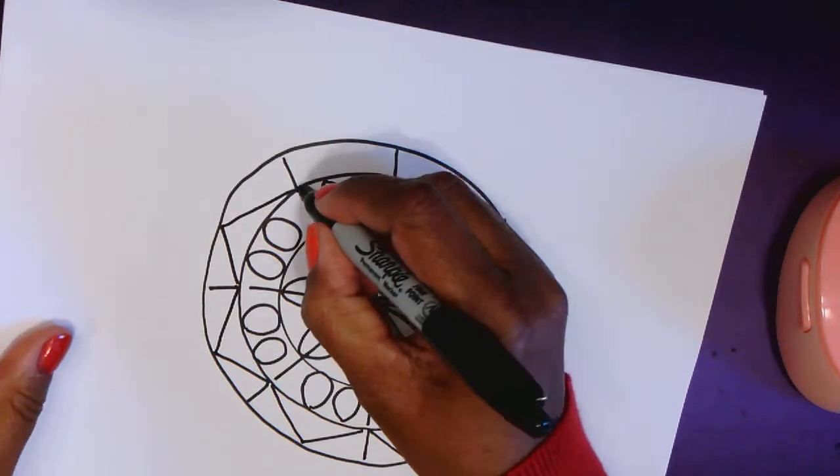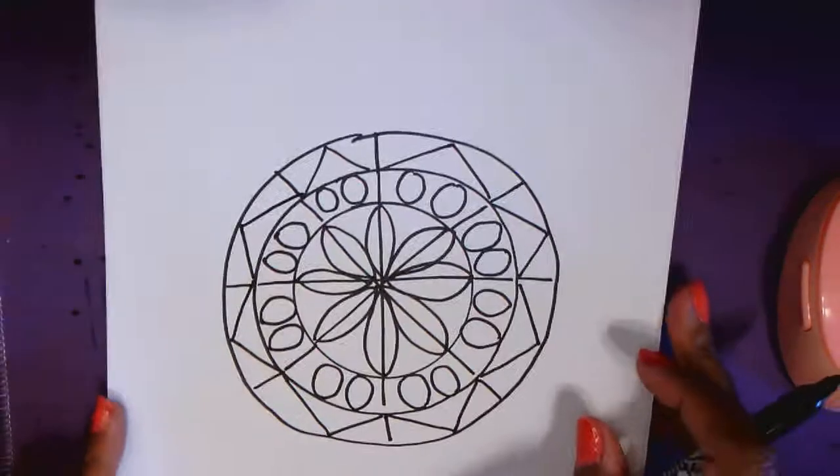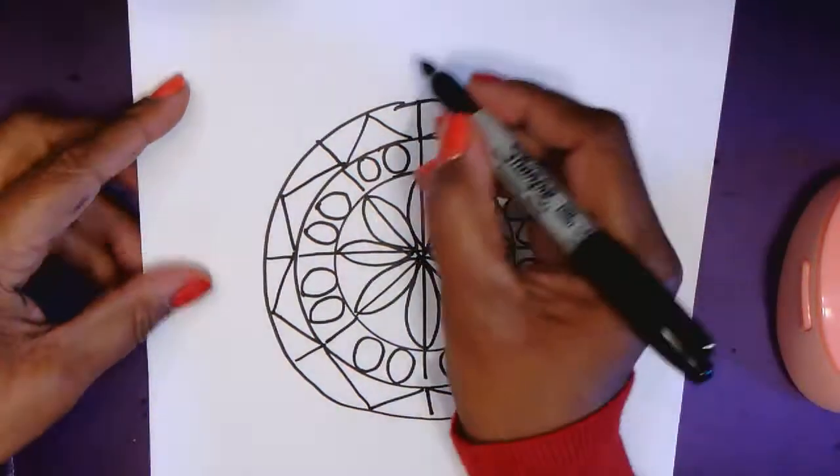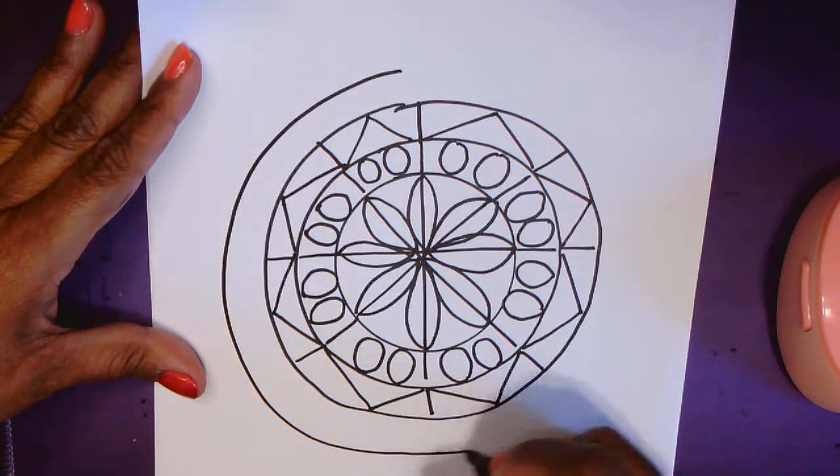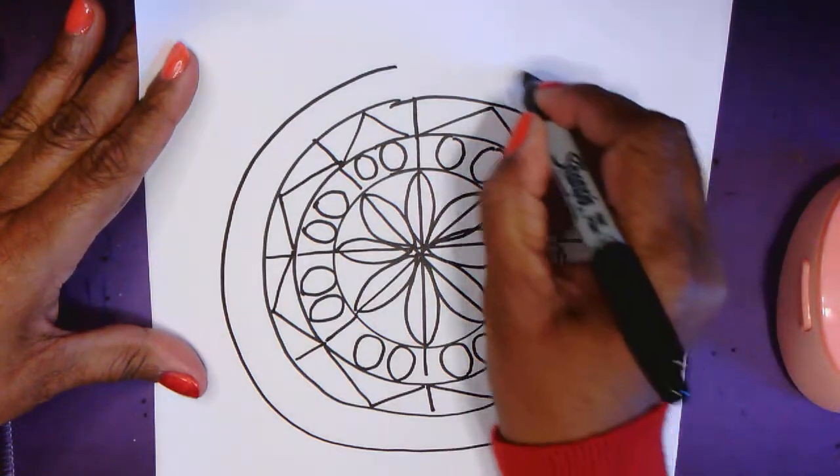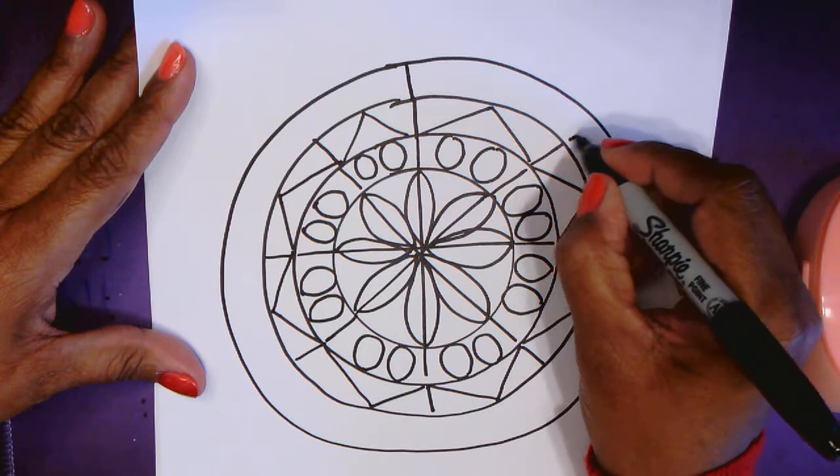Again it's easier for me to turn my paper. I'm just using our basic shapes. Good. Alright. Coming out pretty good. Alright. Another. My circles aren't perfect but that's okay.